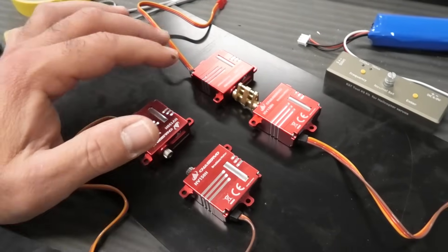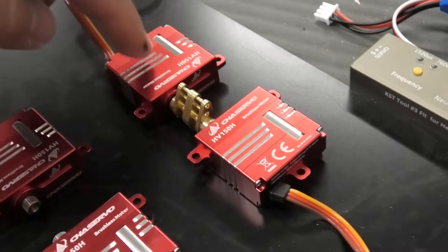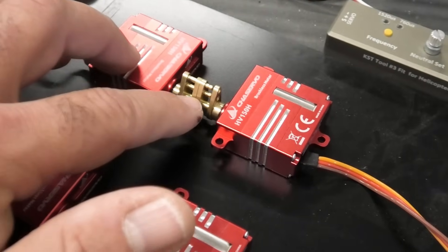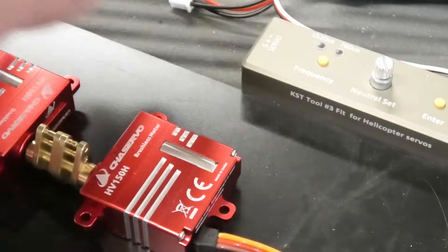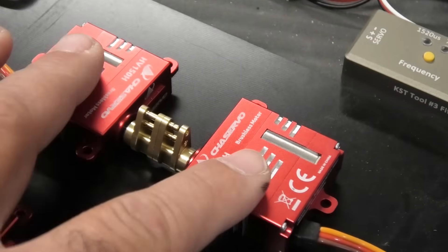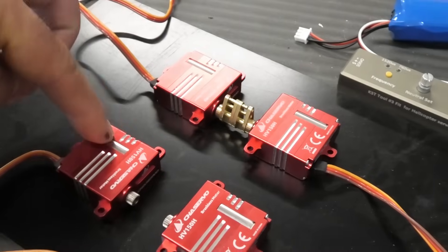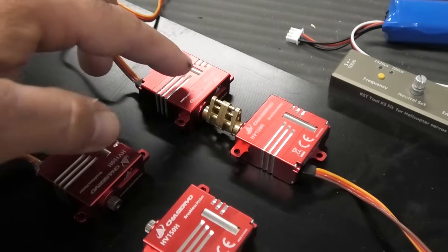I'm trying to program the servos to center them to get them identical, and I started with this one. As you can see, I put two pins in these aluminum horns and I'm using the KST servo programmer to program this servo to make it match this guy.